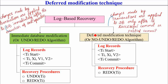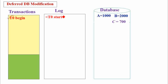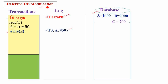Let us now discuss deferred database modification technique. In this technique, changes made by transactions are applied to the database only after its successful commit or partial commit. When a transaction starts, a start record is made immediately. A, B, C account balances are initially 1000, 2000, and 700. When a write operation is performed, the corresponding update record is made into the log. Note that in deferred modification, the update record does not have the old values — only the new value entry is made into the log record.